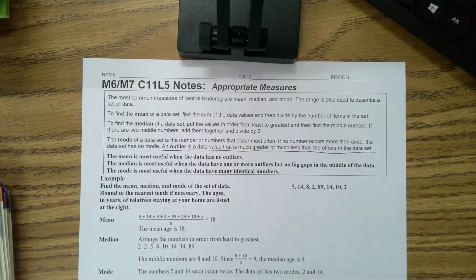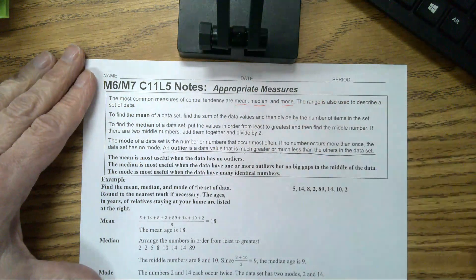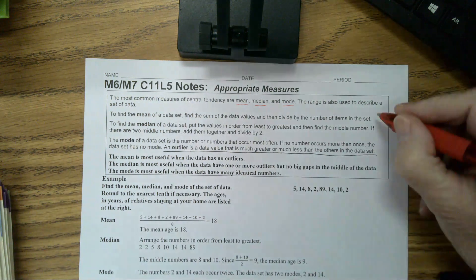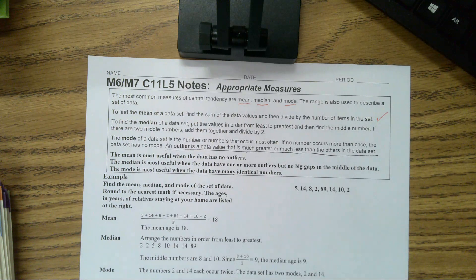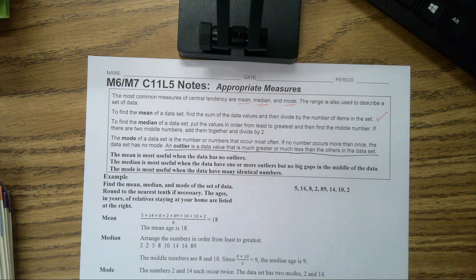The most common measures of central tendency are mean, median, and mode. The range is also used to describe a set of data. To find the mean of a data set, you find the sum of the data values and then divide by the number of items in the set. To find the median, you put the values in order from least to greatest — if you don't, you're going to get the wrong median — and then find the middle number. If there are two middle numbers, add them together and divide by two.